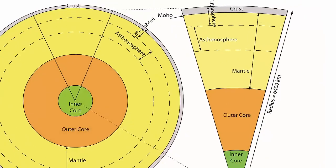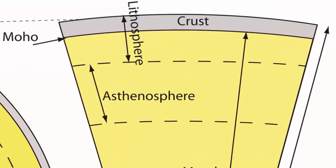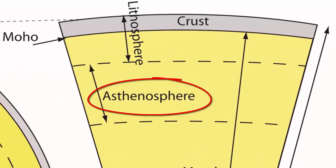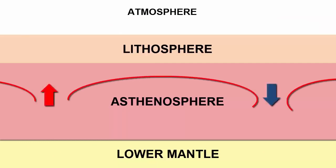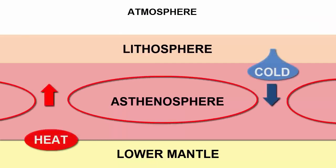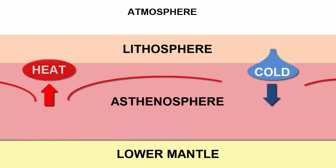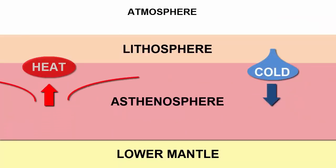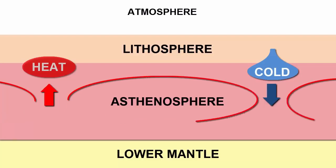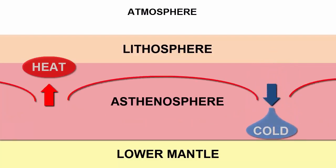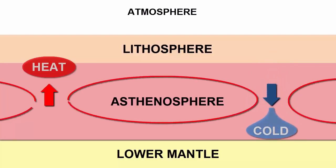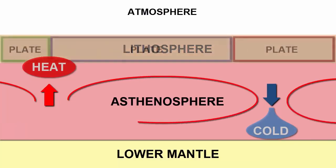To understand plate tectonics, we need to look closely at the convecting asthenosphere. The convecting asthenosphere will cause heat to pile up under certain portions of the lithosphere, and cold material to sink under other parts. What does that do to the lithosphere?